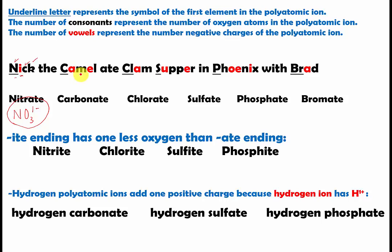Then we have the word 'Camo,' which is related to carbonate. C is underlined, so it's carbon. We have one, two, three consonants, giving three oxygen atoms. And we have two vowels — one, two — so therefore it's two minus. The formula for carbonate is CO3 two minus.